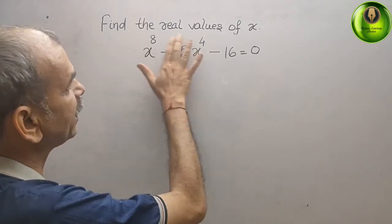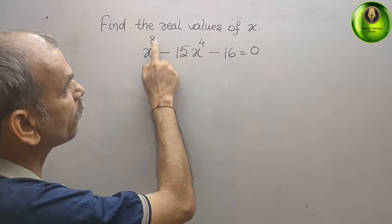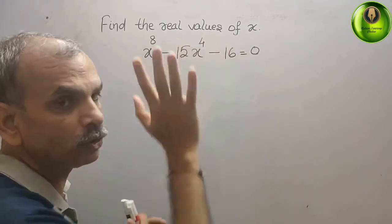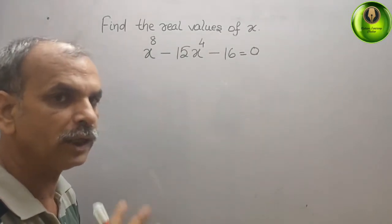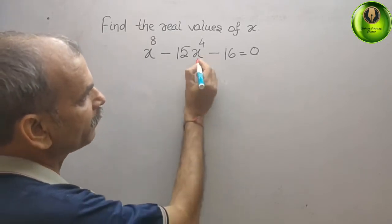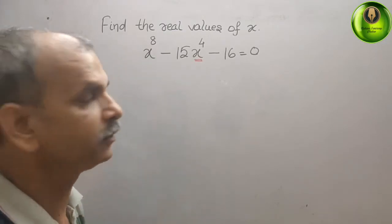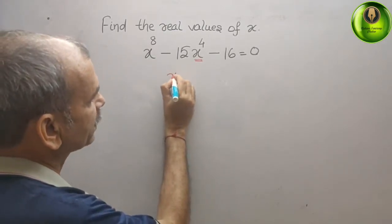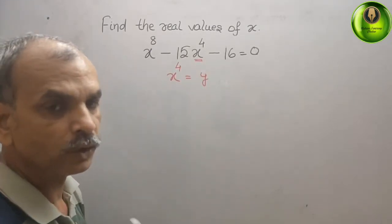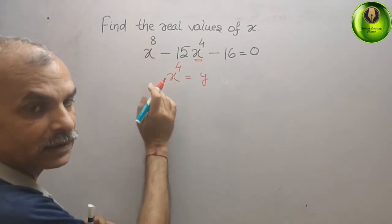The question is to find the real values of x, given x to the power of 8 minus 15 x to the power of 4 minus 16 equals 0. What we will do here is reduce the powers. You can see this power is 4, so we will take it as y. Now we can say x to the power of 4 is equal to y, and the new equation becomes y squared.